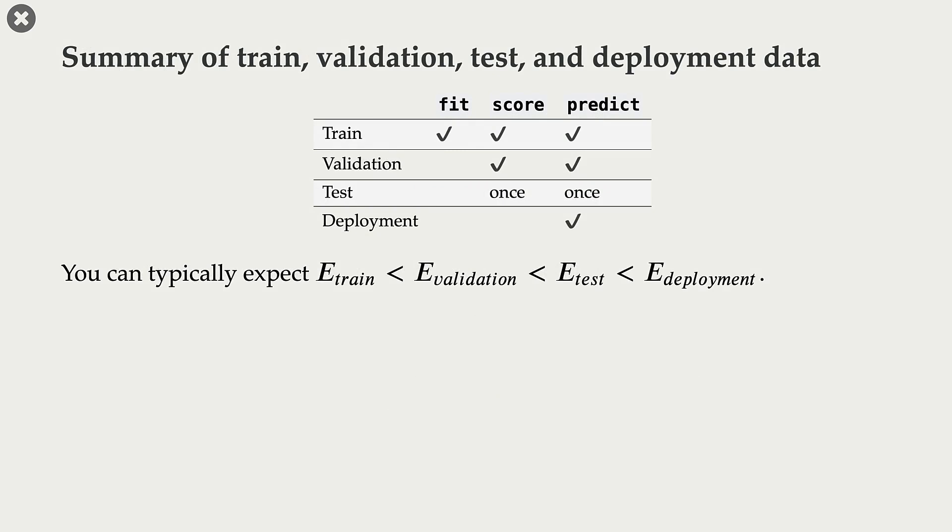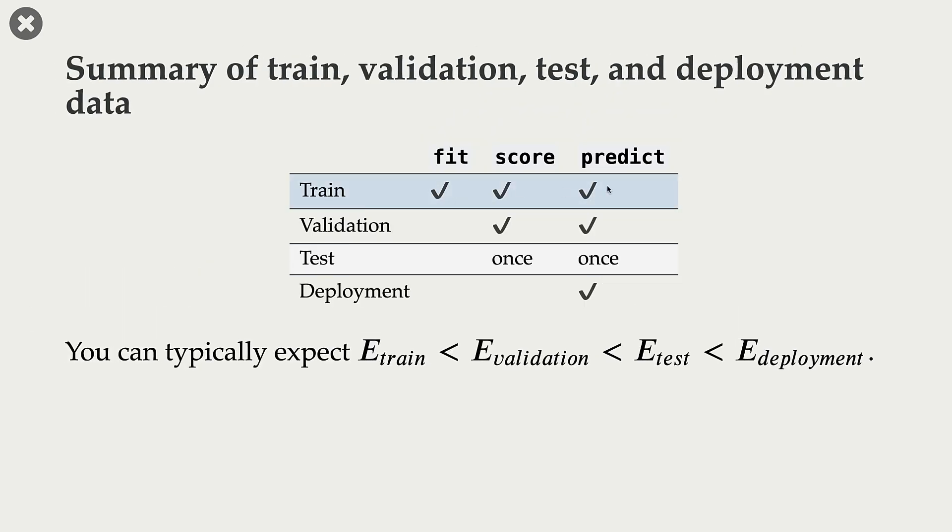Let's summarize what we just discussed. We talked about train, validation, test, and deployment data. We call fit, score, and predict on training data. We do not call fit on the validation data. We use it for hyperparameter optimization, and we call score and predict multiple times on validation data. Once we have the best model after hyperparameter optimization, we use the test data to assess our model. So we call predict and score only once on the test data. For all these three, for training data, validation, and test data, we have access to targets. For deployment data, we do not have access to the targets. And we use our model for predictions on this deployment data. And typically, you can expect that your training error is less than your validation error, which is less than your test error, which is less than your deployment error.